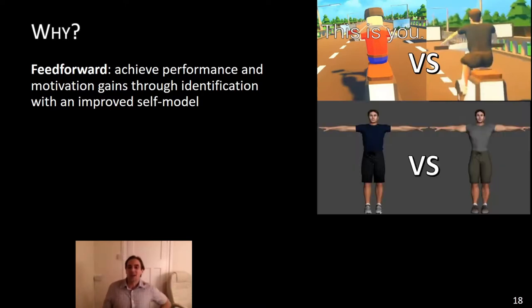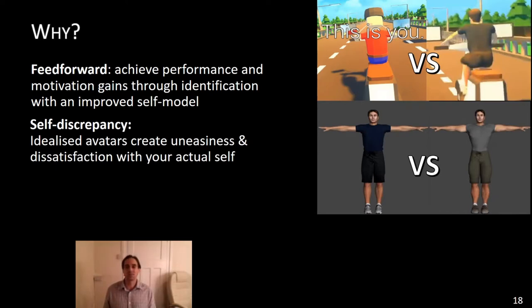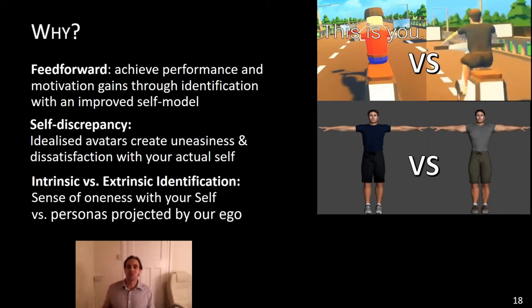With regards to idealized avatar, why did people exert less power? One explanation is self-discrepancy. Basically, if you're comparing yourself against something that you're not, that can make you feel uncomfortable, uneasy, dissatisfied with your actual self. It's called self-discrepancy and that can hold you back, that can be demotivating. Based on self-determination theory, which is a popular motivation theory from psychology, we form two concepts which explain what we observed quite well of intrinsic and extrinsic identification.